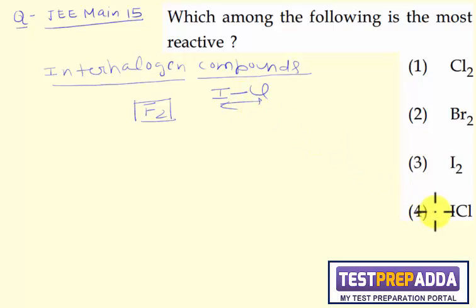In this case, option 4, ICl is an interhalogen compound and that is why it will be more reactive than I2, Br2, and Cl2. So option 4 is the correct answer here.